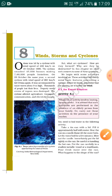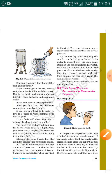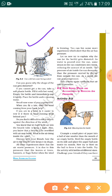We have already discussed the activity to show that air exerts pressure. In this activity, we took a Pepsi or Coca-Cola can, filled it three-fourths with water, and boiled it. After boiling, the water turned into steam, and the air present in the upper portion escaped out because the steam pushed it outside.